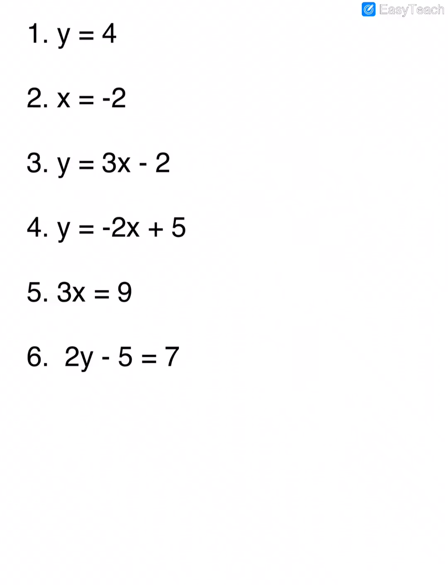So let's look at these equations in practice. In number 1, we have y equals 4. So what kind of line would that be? It would be horizontal. Number 2, x equals negative 2. There's only an x, VUX, so that would be a vertical line. In number 3, we have y equals 3x minus 2. There's a y and an x in this line, so this line would be diagonal.